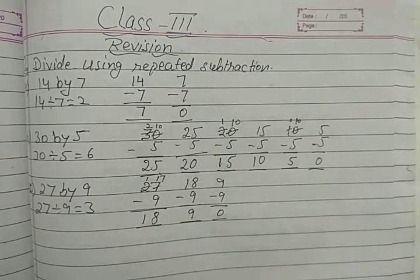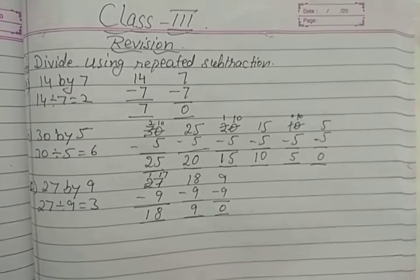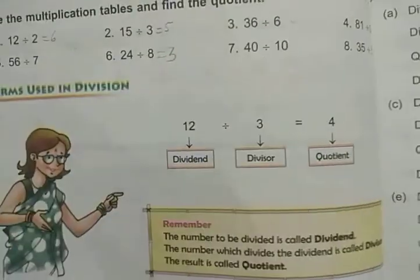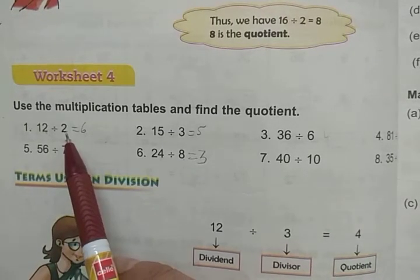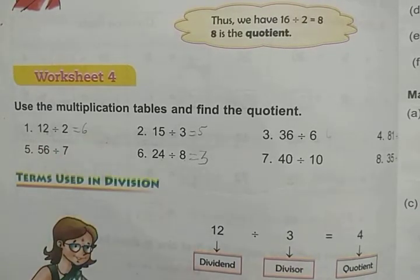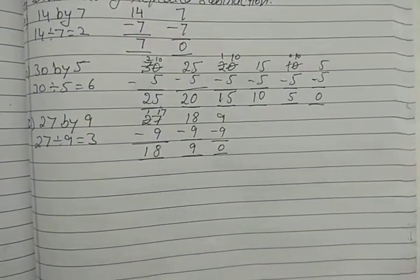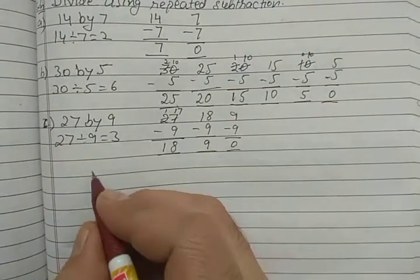Hello students. In the previous video we started the revision of Unit 5 and revised how to divide numbers using the repeated subtraction method and also how to divide using the multiplication table — that is, orally how we can divide by reciting the table to easily get the quotient. Now we will revise the terms used in division.